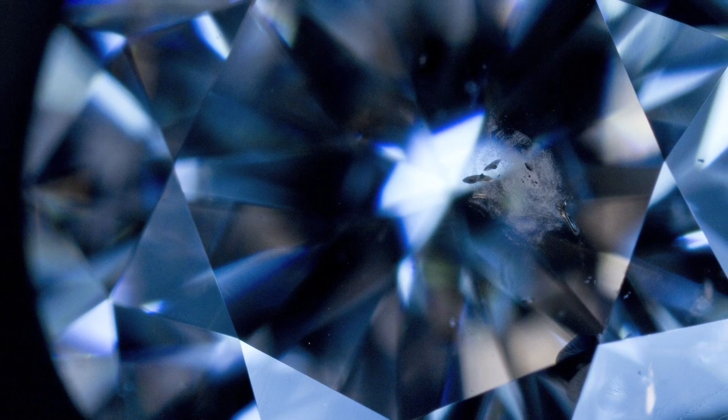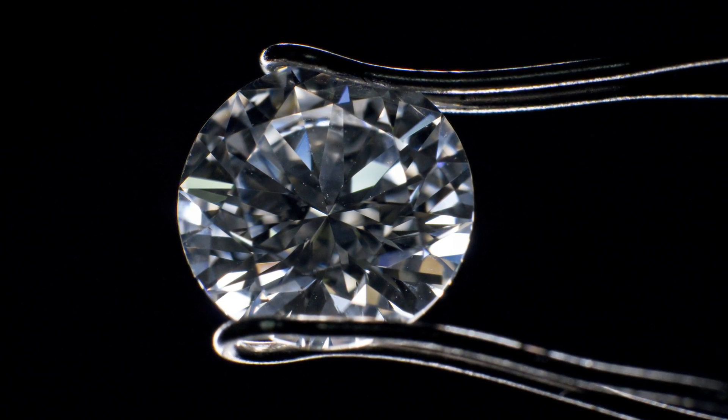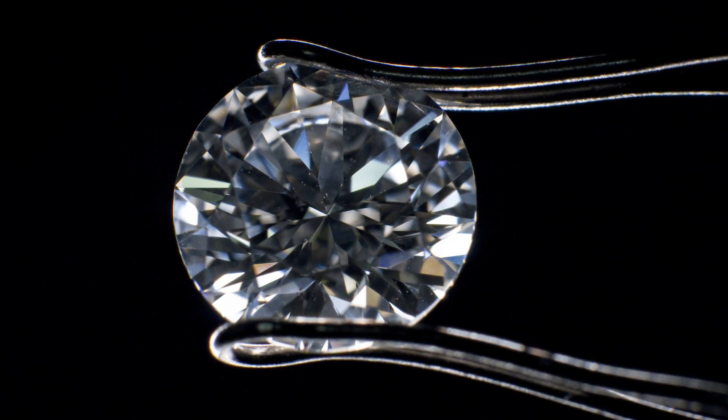Identifying the exact mineral or impurity that has been trapped within the diamond billions of years ago is almost impossible. But by looking at the shape and the structure of the inclusion, specific names can be given to certain types.